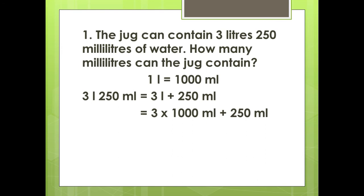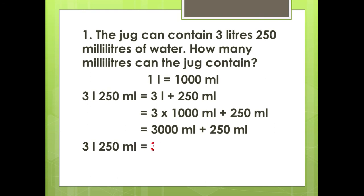So, 3 × 1000 milliliters is 3000 milliliters. 3000 milliliters plus 250 milliliters — the units are the same, so we can add them. 3000 plus 250 is 3250 milliliters. So, if we convert 3 liters and 250 milliliters into milliliters, the answer is 3250 milliliters.